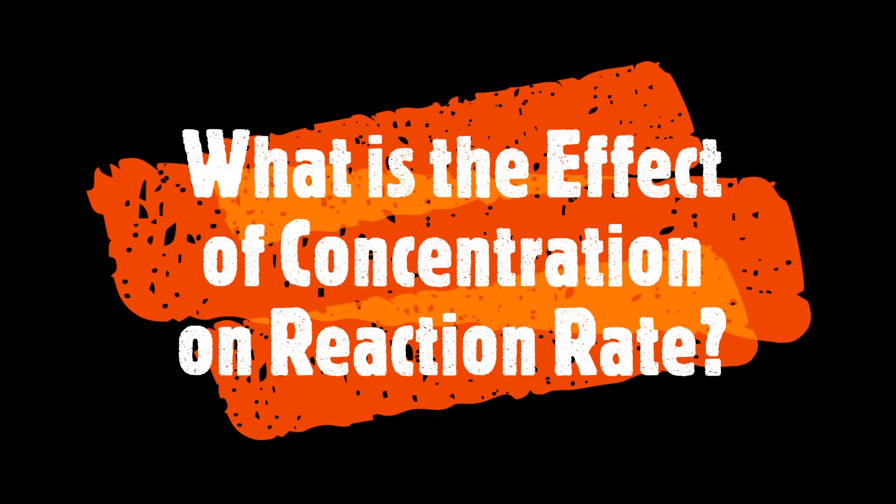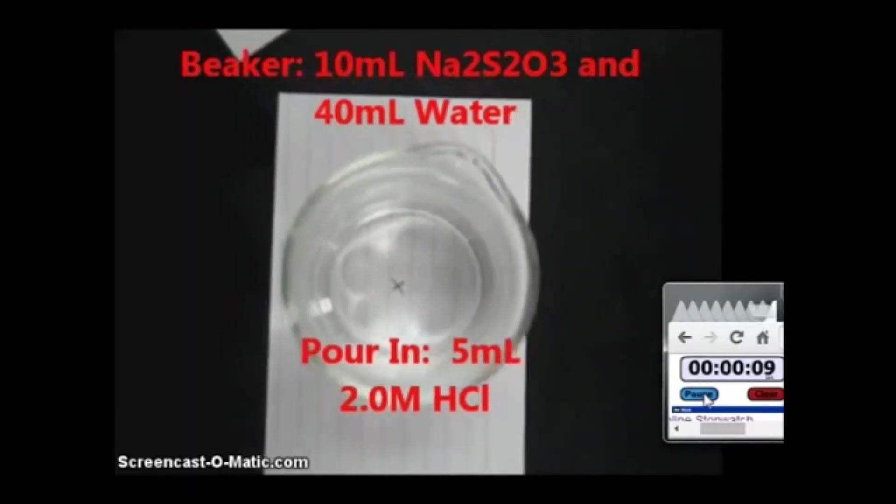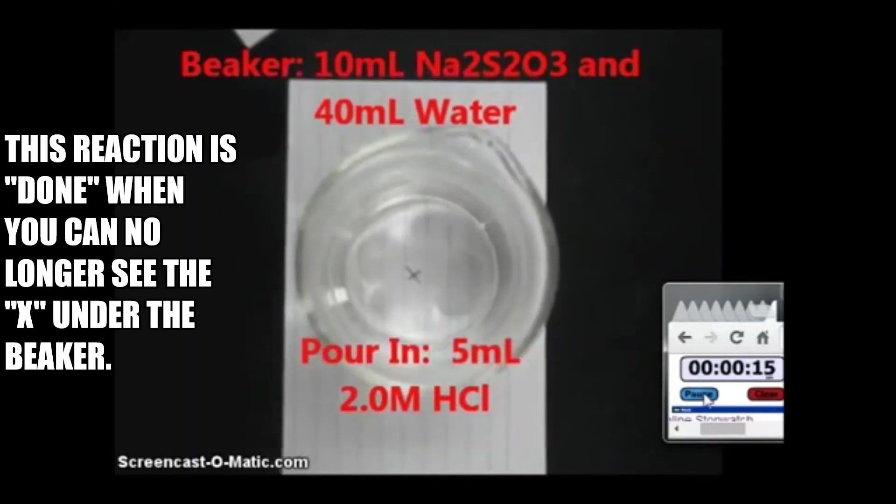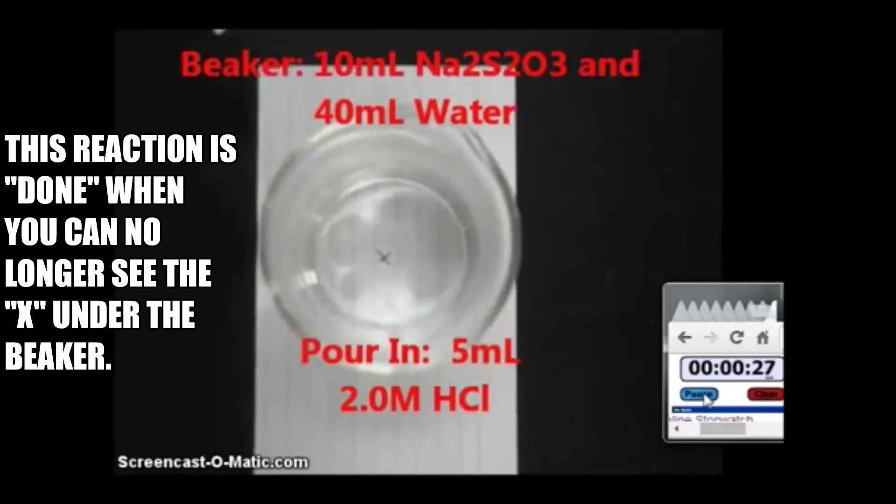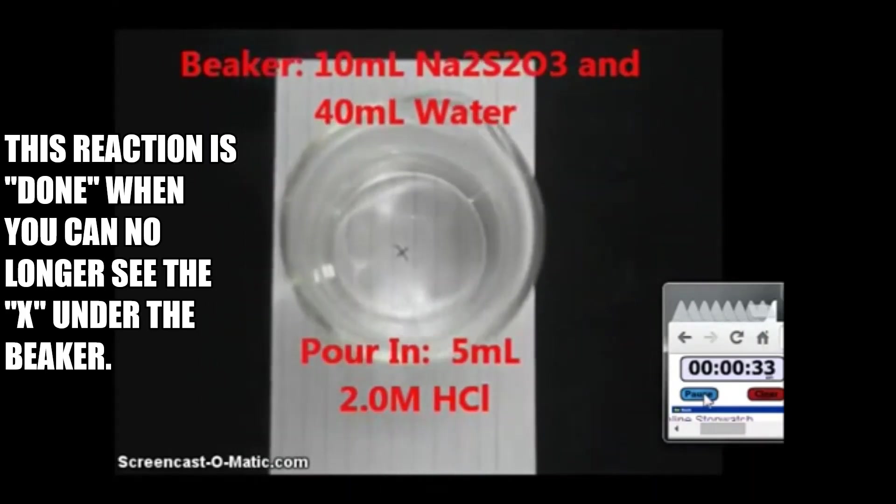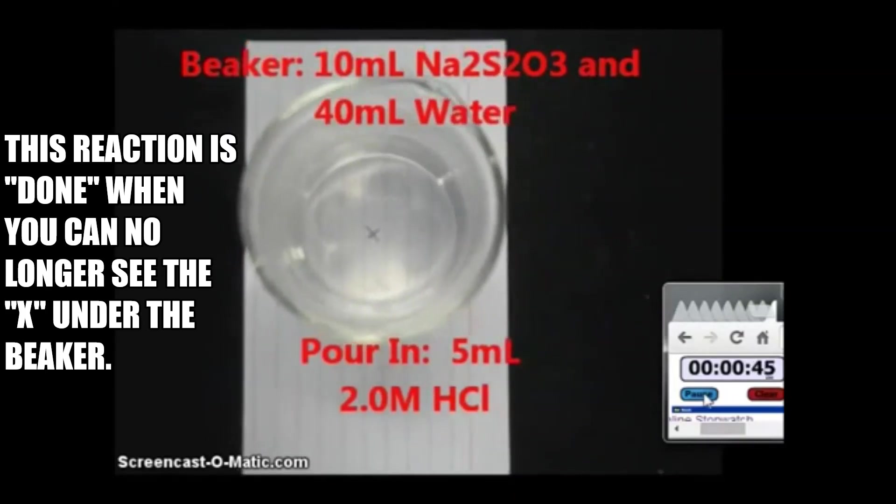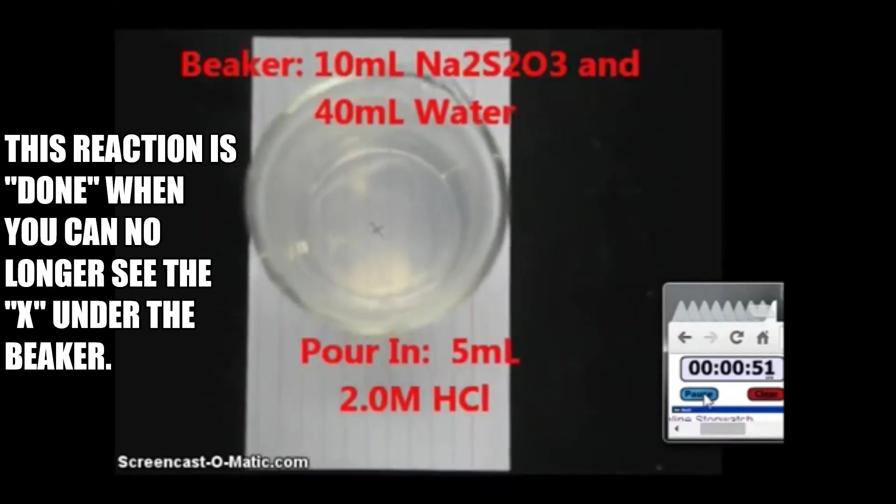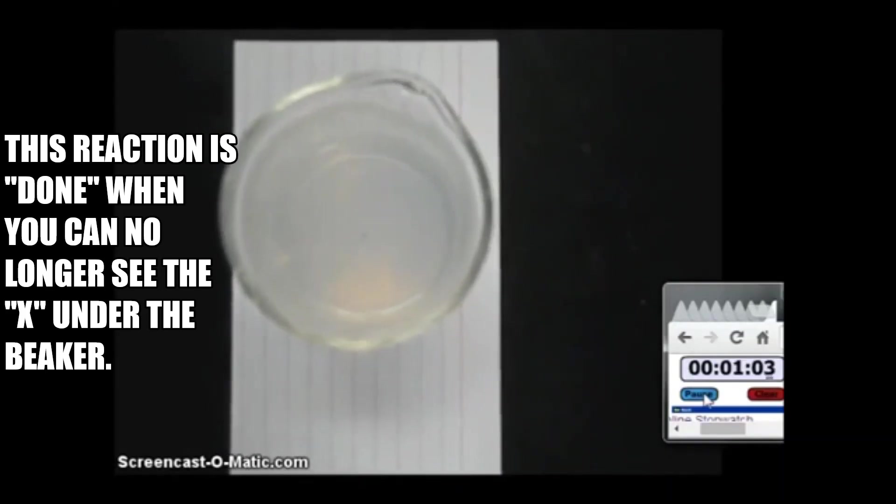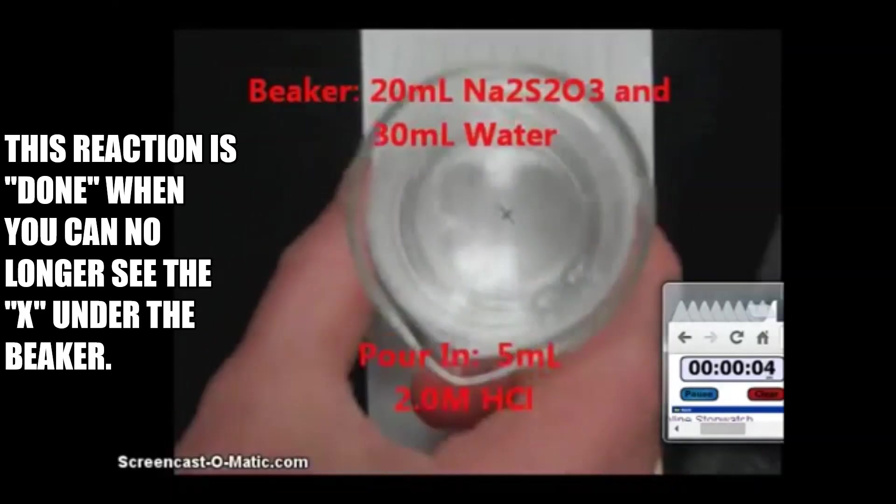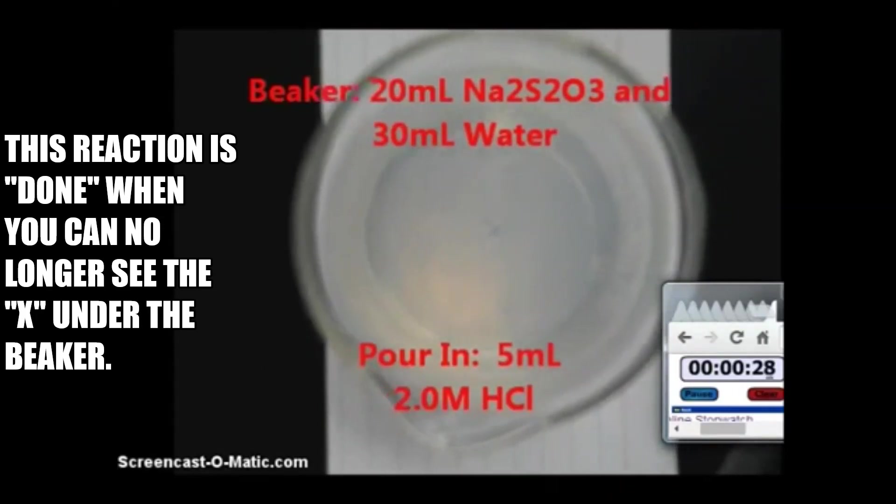In this next clip we'll examine data from an experiment performed by adding a solution of sodium thiosulfate Na2S2O3 into a beaker and then adding hydrochloric acid HCl. The reaction observed in this experiment produces a solid precipitate that makes the water become cloudy. The reaction is said to be finished when a printed X on paper under the reaction beaker can no longer be seen due to the precipitate forming. The first trial is run with a one-fifth dilution of Na2S2O3 and takes over 70 seconds until it's done. The second trial is run using a more highly concentrated two-fifths dilution of Na2S2O3 which finishes in a little over 30 seconds.